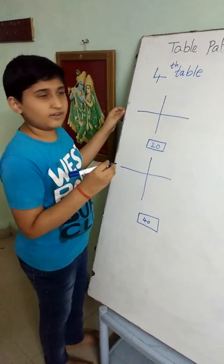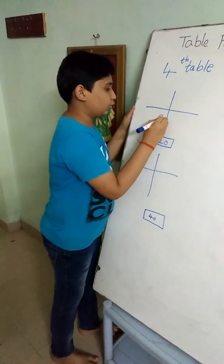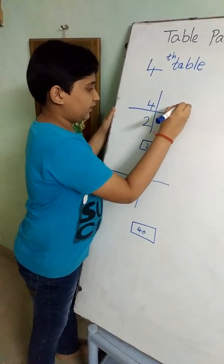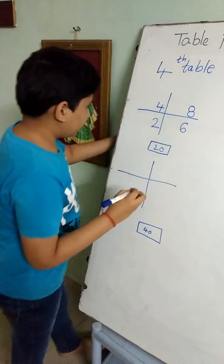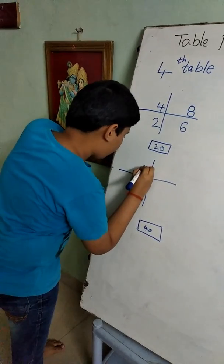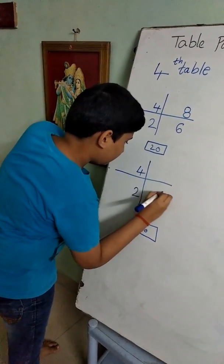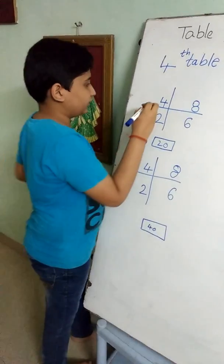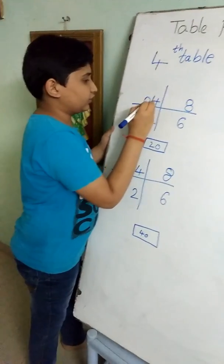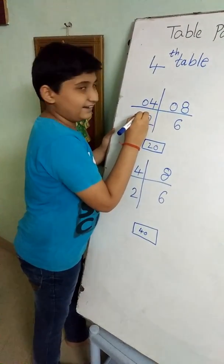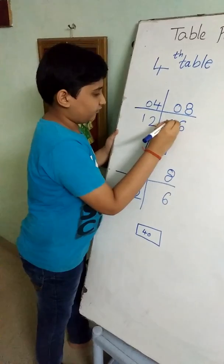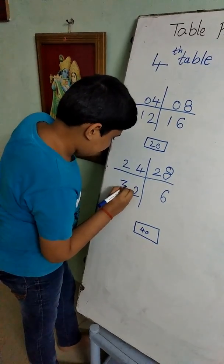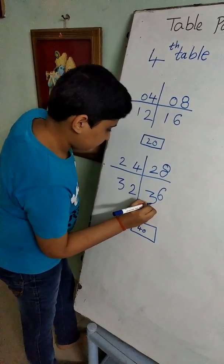And now we should write the even numbers: 2, 4, 6, 8. We should write as it is here: 2, 4, 6, 8. And now we should keep 0s in the first row: 0, 0. And next 1, 1. And next 2 and 2. After that 3 and 3. This is the 4th table.